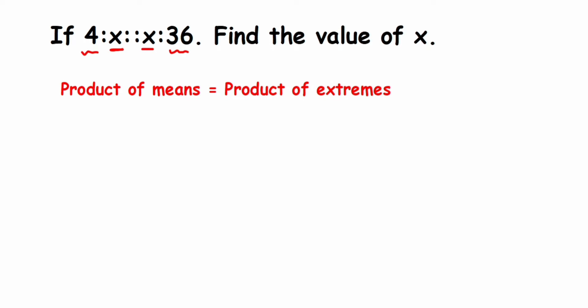We're going to substitute in this formula: product of means equals product of extremes. Product means multiplication, so we have to multiply the means. It will be x multiplied by x equals the product of extremes, so it is 4 multiplied by 36. x into x is x square equals 4 into 36 is 144.